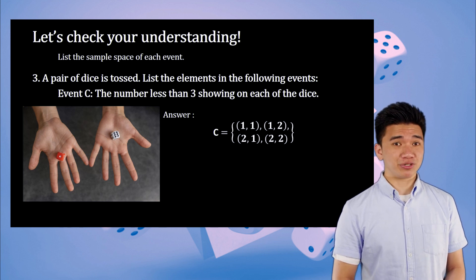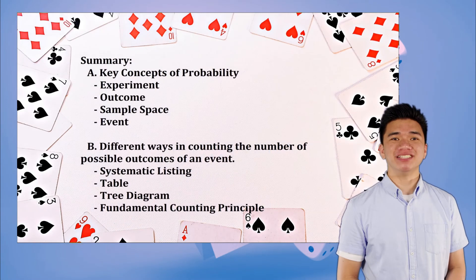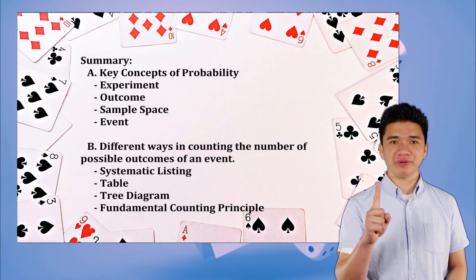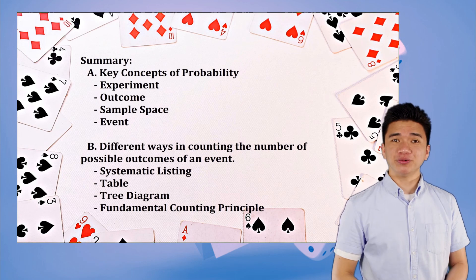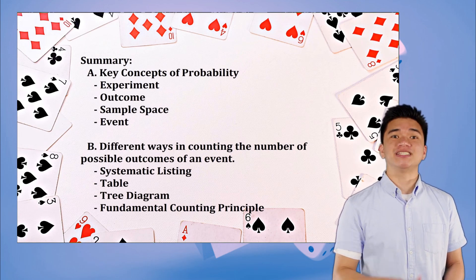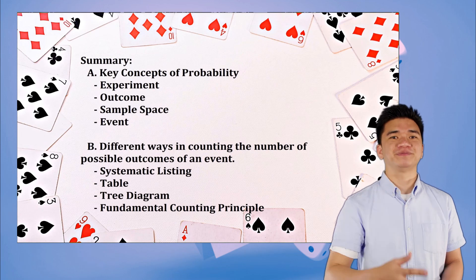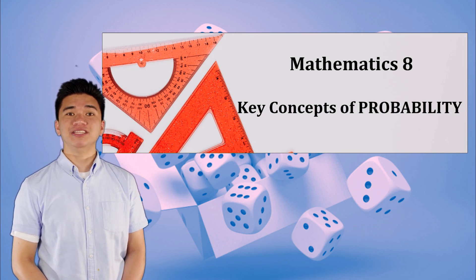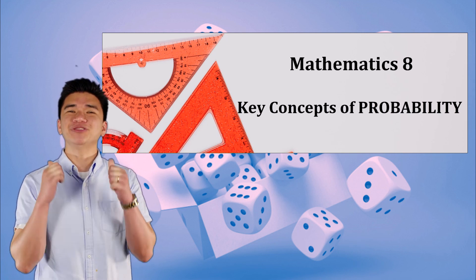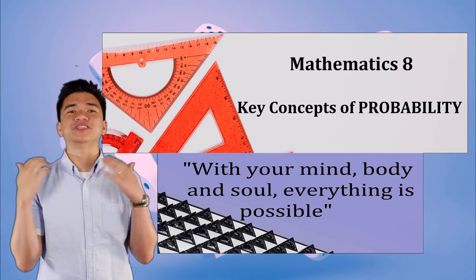Did you get all the items right? If yes, splendid work! To summarize the key concepts of probability: experiment, outcome, sample space, and event. The different ways of counting the number of possible outcomes are systematic listing, table, tree diagram, and fundamental counting principle. That ends our discussion. I am Sir Solapasible saying: with your mind, body, and soul, everything is possible. Thank you.